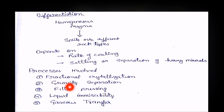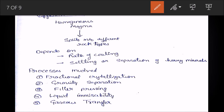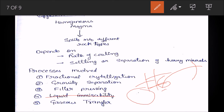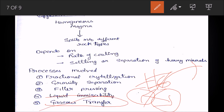Other differentiation processes include filter pressing, where liquid trapped in spaces between crystals is squeezed out by high pressure; liquid immiscibility, where two liquids form within the magma at different temperatures and are immiscible — they don't dissolve in each other and thus differentiate; and gaseous transfer, where gas is transferred out of the magma system.